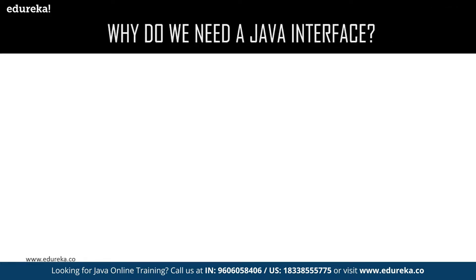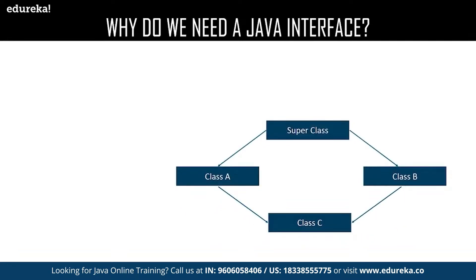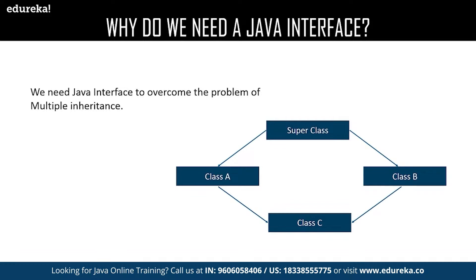We all know that Java supports inheritance, but when it comes to multiple inheritance Java cannot support it. It ends up facing ambiguity between two parent classes and fails to provide the required result. This particular problem is called the diamond problem. There is a super class inherited by two classes, class A and class B, and we are trying to inherit both into class C, which is practically impossible in Java.